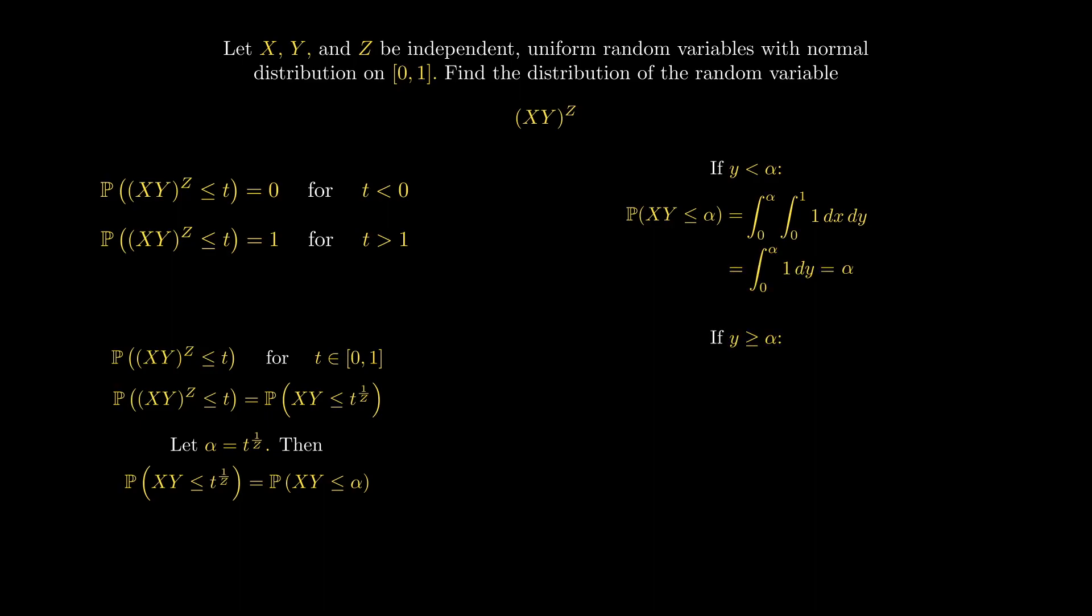If y is greater than or equal to alpha, then x can only range from 0 to alpha over y, which we can again evaluate in a double integral to get negative alpha times the natural log of alpha.